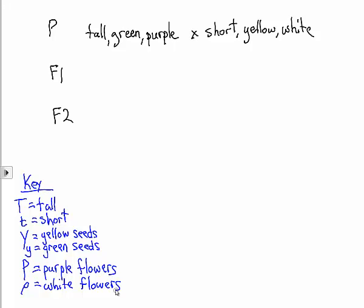Let's say, for example, that we're crossing a tall, green seeded plant with purple flowers with a short, yellow seeded plant with white flowers. And I put in the key that purple is dominant over white. How would we approach this problem?